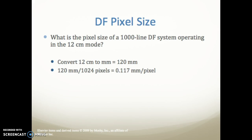Here's an example: what is the pixel size of a thousand-line DF system operating in the 12 cm mode? You convert 12 cm to millimeters, which is 120 mm, and divide 120 mm by 1024 pixels, giving you a 0.117 mm pixel.